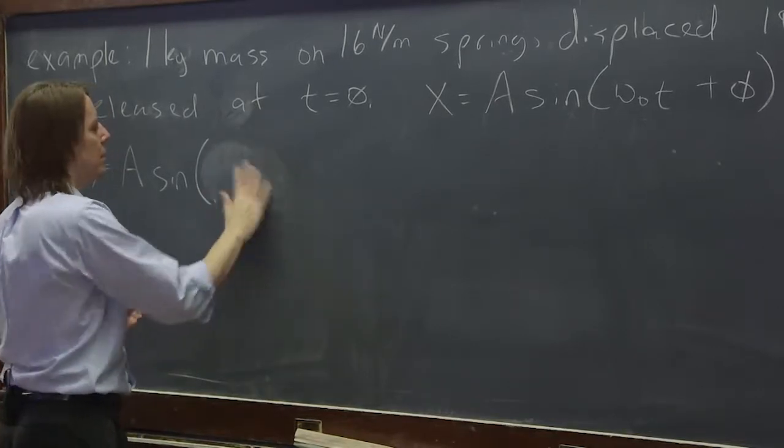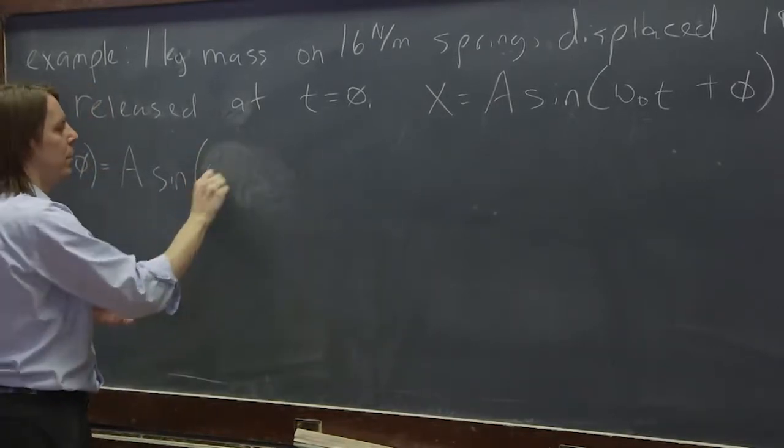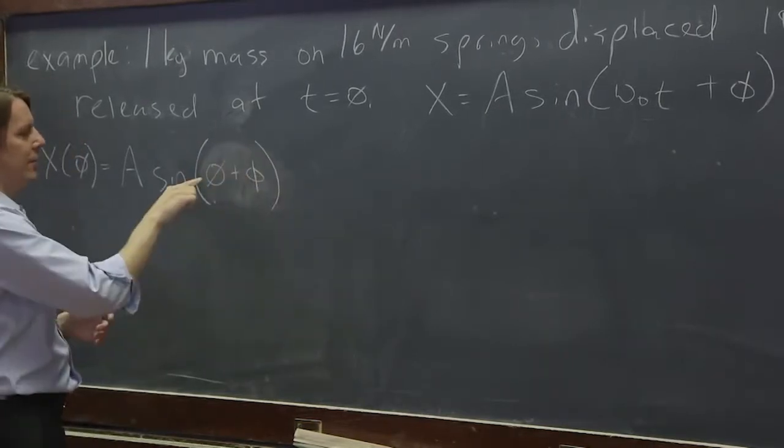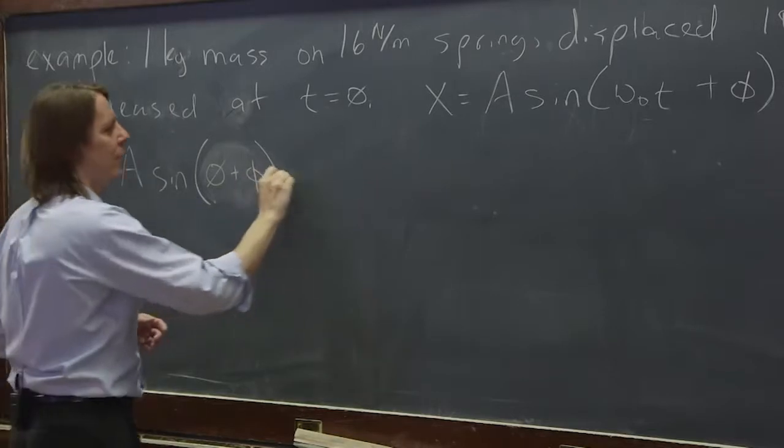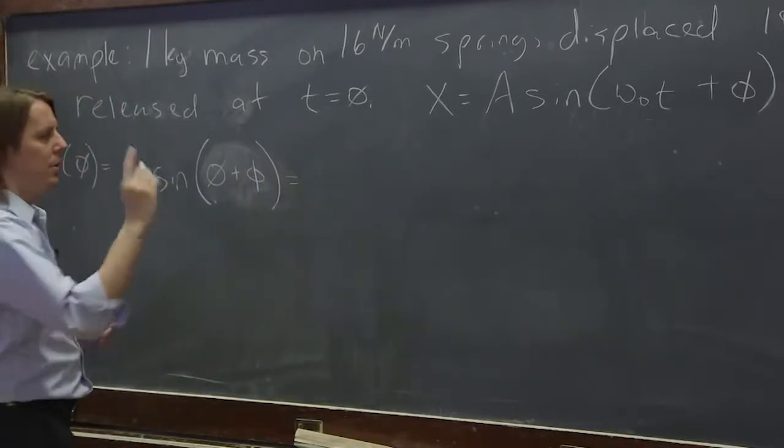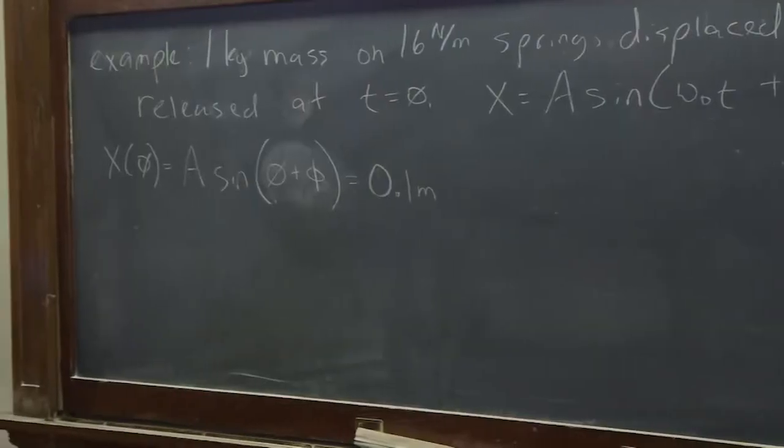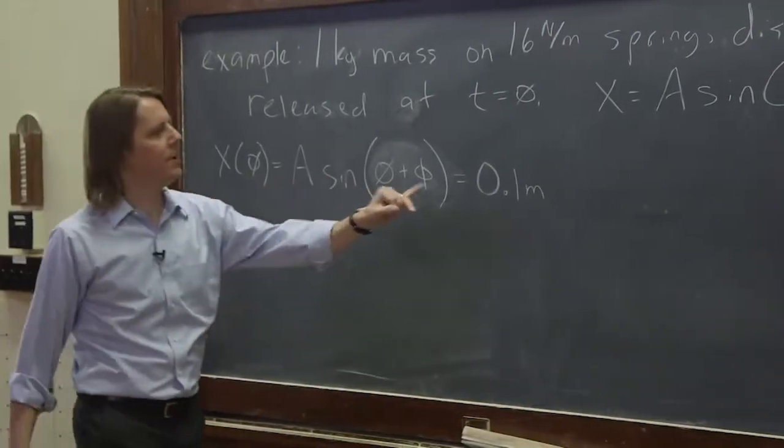You don't even put that there. It's zero plus the phase, that is zero plus phi. So that is equal to 0.1 meters. I'd recommend staying in MKS units. So A sine phi is 0.1 meters.